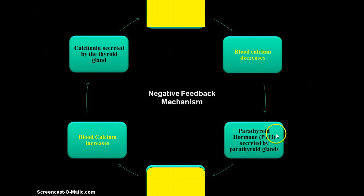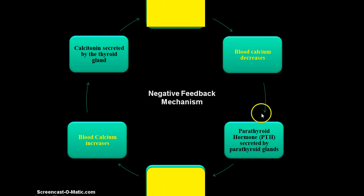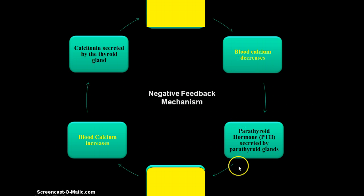When blood calcium decreases, that will stimulate the release of parathyroid hormone, which is secreted by the parathyroid glands — four glands located behind the thyroid gland. If blood calcium level is going down, the goal of parathyroid hormone is to bring blood calcium level back up. Think about the osteoblasts and osteoclasts we discussed — what will parathyroid hormone do to these cells in order to raise blood calcium?